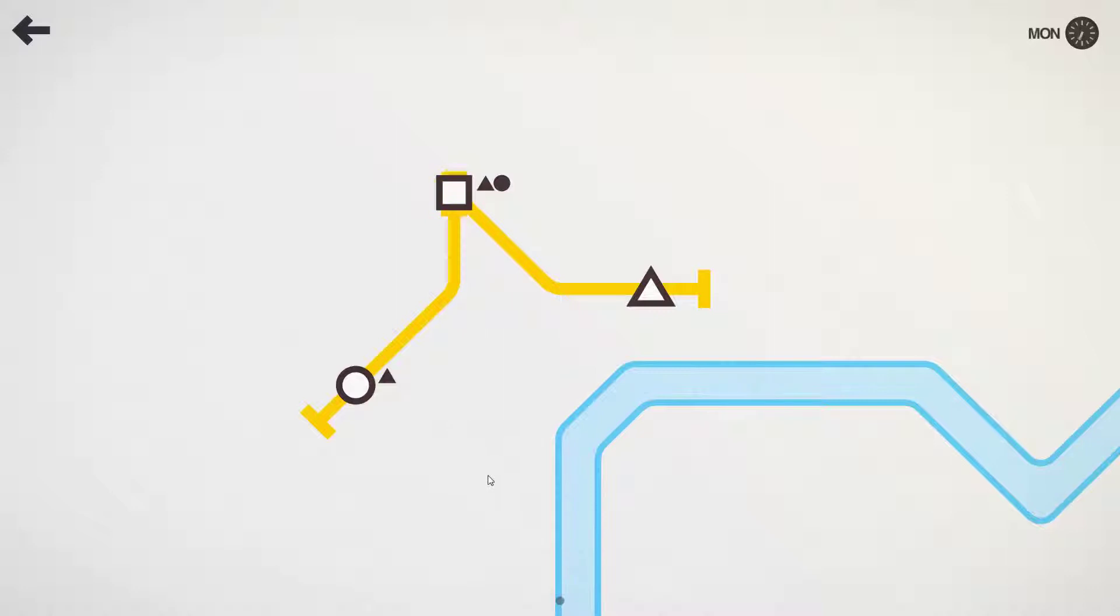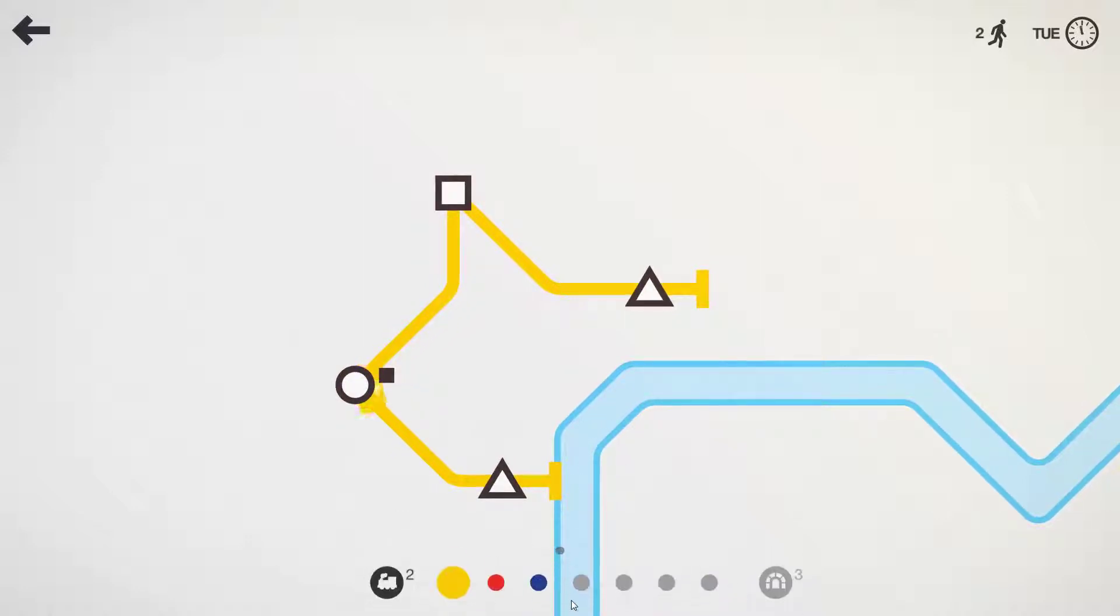A train automatically starts up and starts ferrying the passengers around. But new subway stations keep popping up, so we drag that handle down to that one to extend it. This is a river. You need tunnels to cross a river. We've only got three of those, so we've got to be a little bit careful about how we use them.